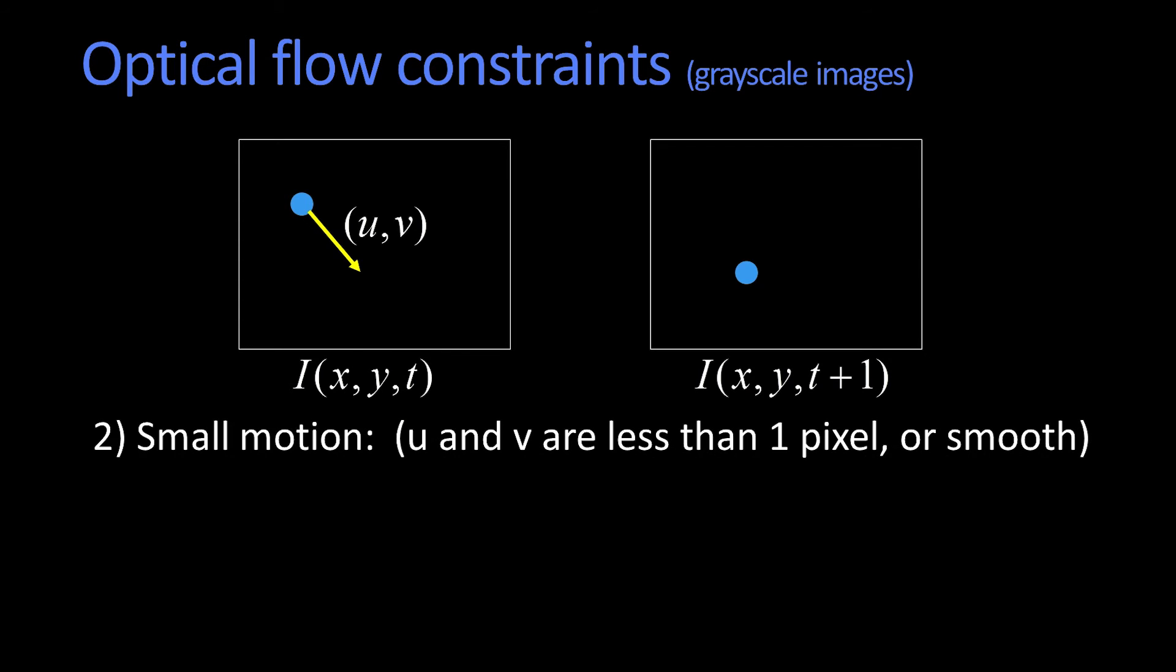The second assumption was that we get a very small amount of motion, okay? So that basically u and v, let's assume they're like one pixel, or part of a pixel, or just things are changing smoothly.